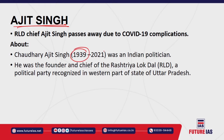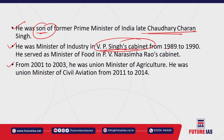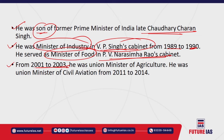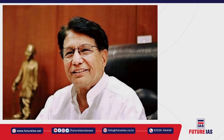Chaudhary Ajit Singh held various portfolios under the Government of India: Union Minister of Industries in the VP Singh cabinet (1989–1990), Union Minister of Food in the PV Narasimha Rao cabinet, Union Minister of Agriculture under Atal Bihari Vajpayee cabinet (2001–2003), and Union Minister of Civil Aviation under the Manmohan Singh cabinet (2011–2014). He recently died due to COVID-19 complications.